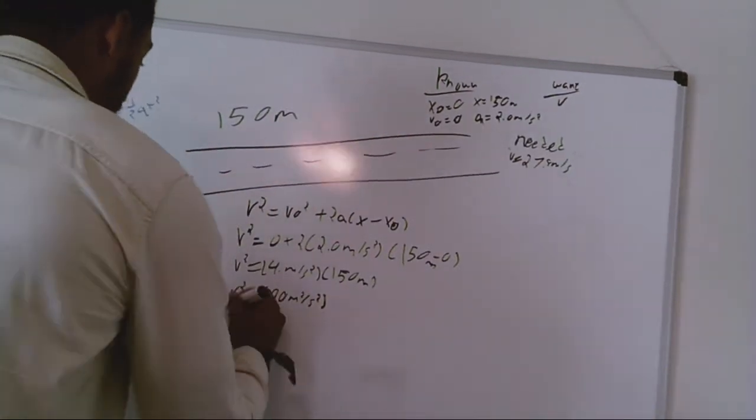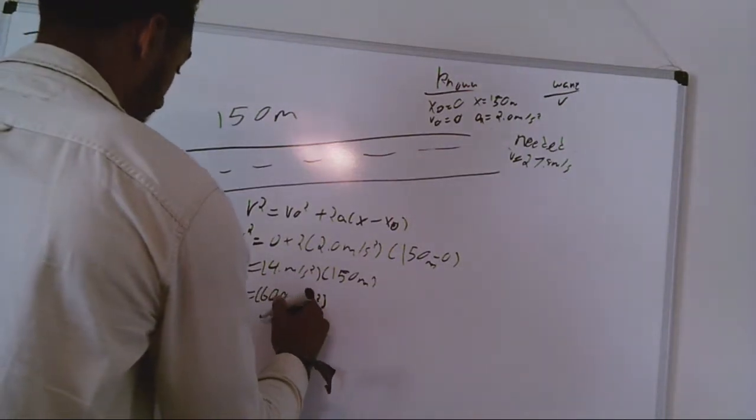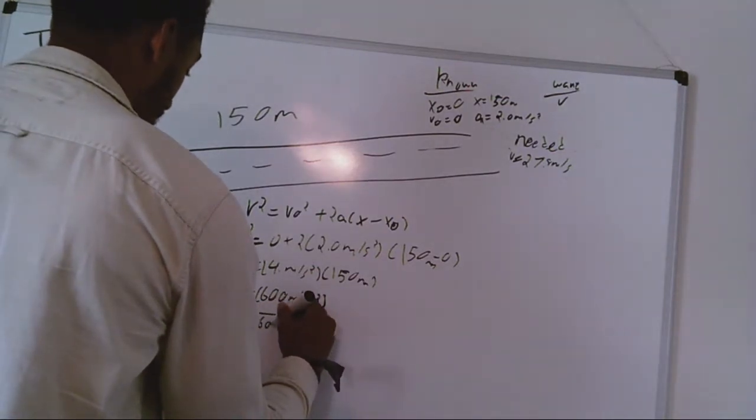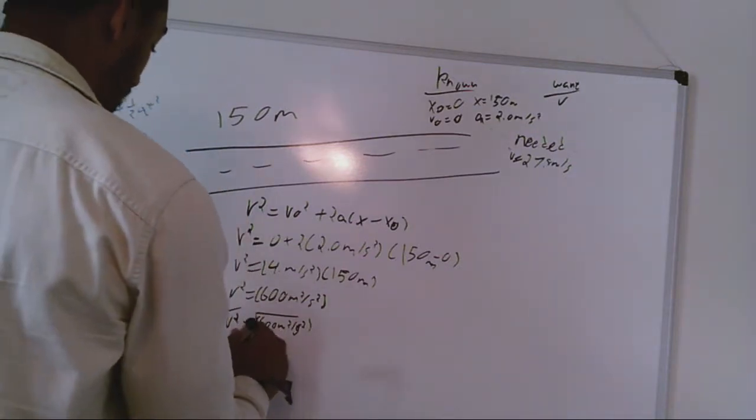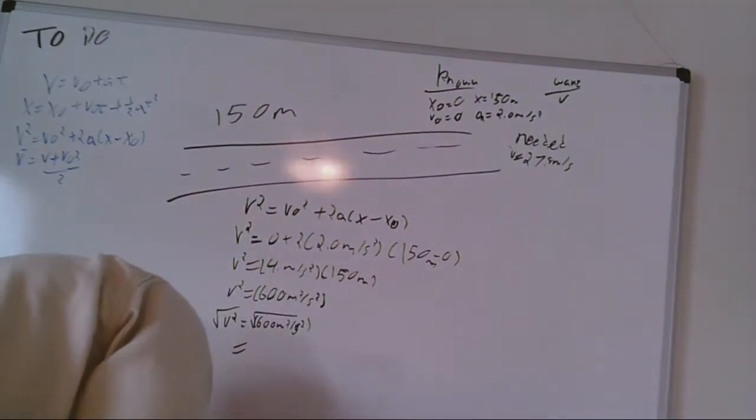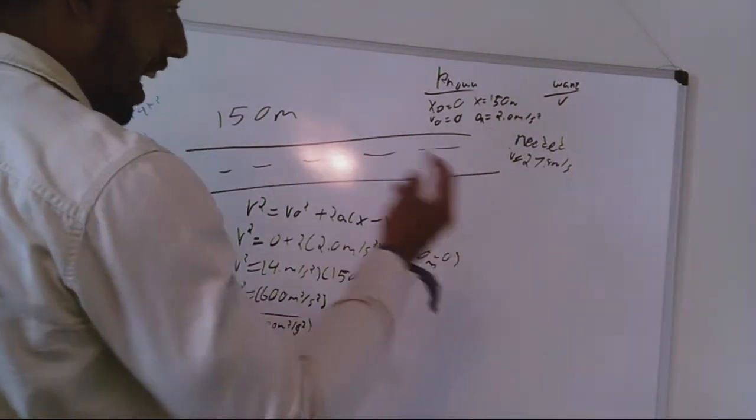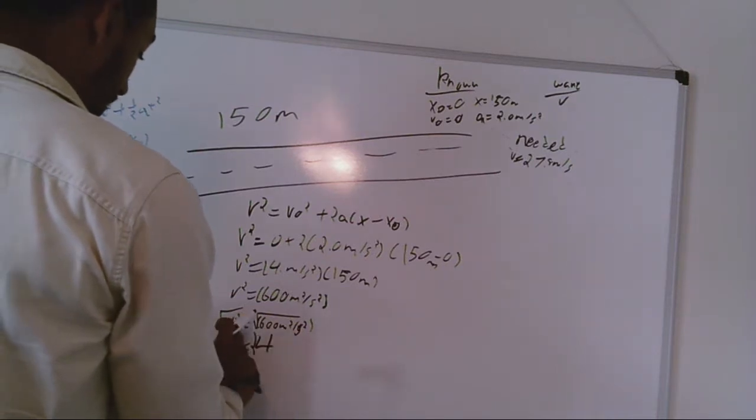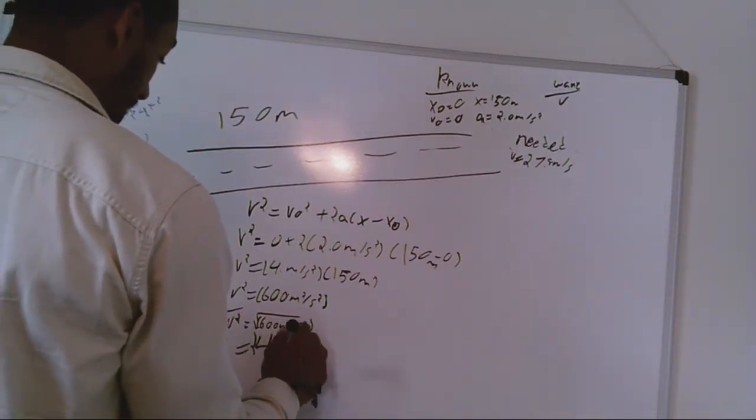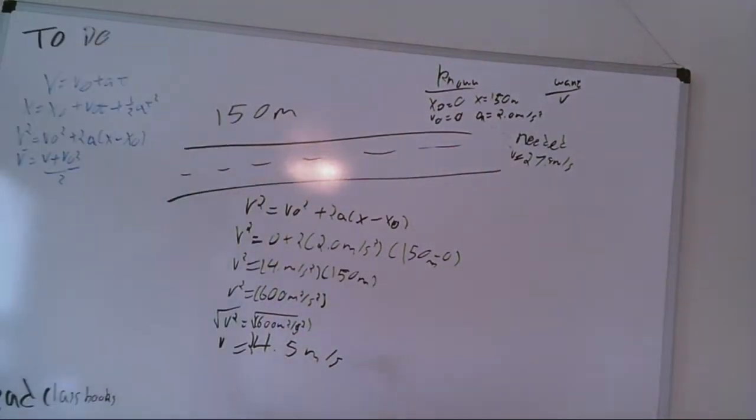In order to get that we have to put that in, we have to square root that pretty much. We have to square root it. And we get it, we got 24.5 meters per second. And that is not what we need. So the airplane isn't fast enough with this particular limit. Not fast enough. It will not make it.